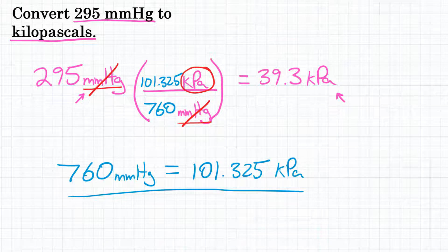Okay, there you have it. Final answer. Convert 295 millimeters of mercury to kilopascals. That would be 39.3.